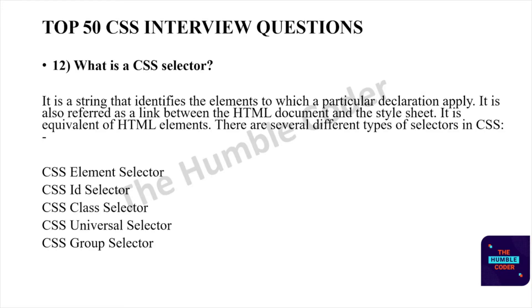What is the CSS selector? It is a string that identifies the elements to which a particular declaration applies. It is also referred to as a link between the HTML document and the style sheet. It is equivalent to HTML elements. There are several different types of selectors in CSS: the element selector, ID selector, class selector, universal selector, and group selector.